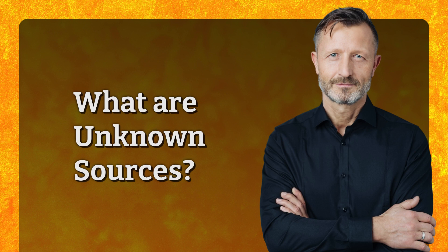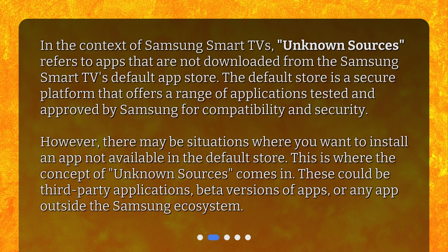What are unknown sources? In the context of Samsung Smart TVs, Unknown Sources refers to apps that are not downloaded from the Samsung Smart TV's default app store. The default store is a secure platform that offers a range of applications tested and approved by Samsung for compatibility and security. However, there may be situations where you want to install an app not available in the default store. This is where the concept of Unknown Sources comes in. These could be third-party applications, beta versions of apps, or any app outside the Samsung ecosystem.